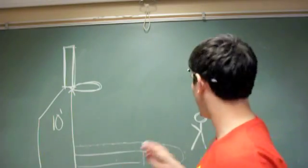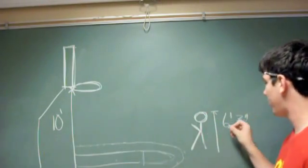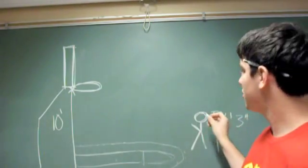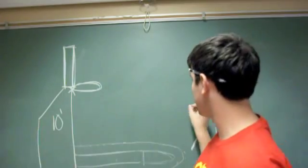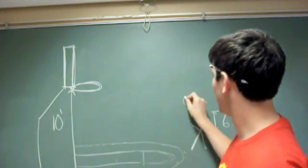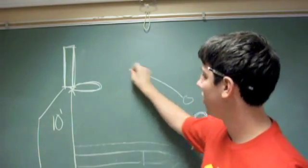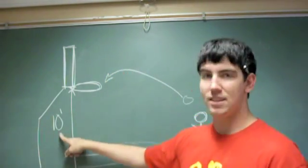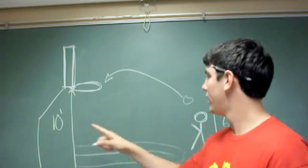Okay, here we have the picture of Mario Chalmers, right here, at 6'3", shooting the basketball from here into the basket at 10'.